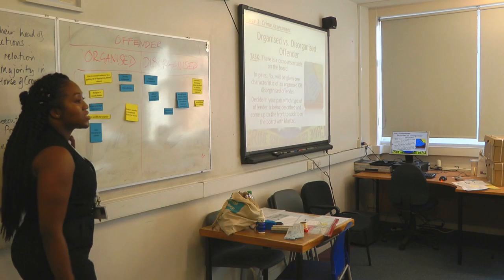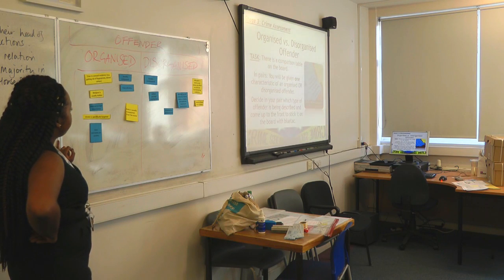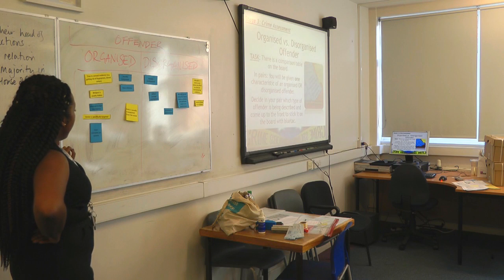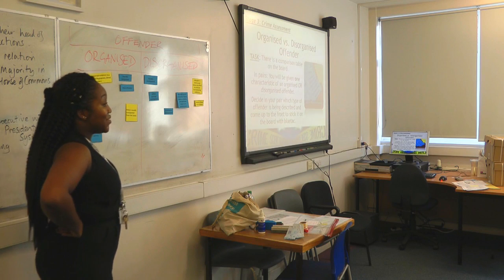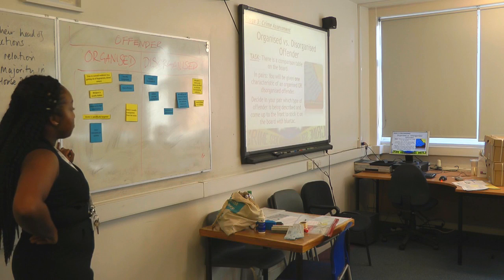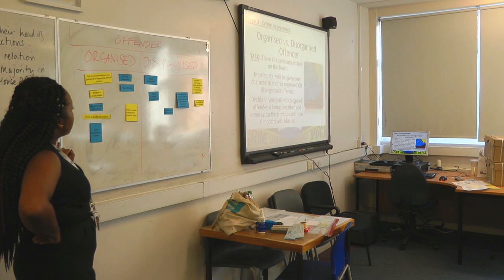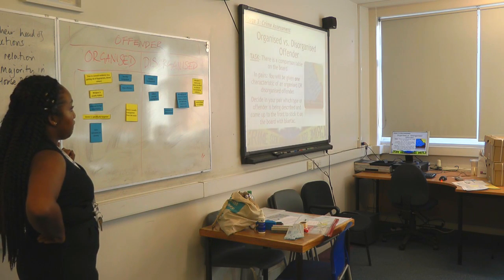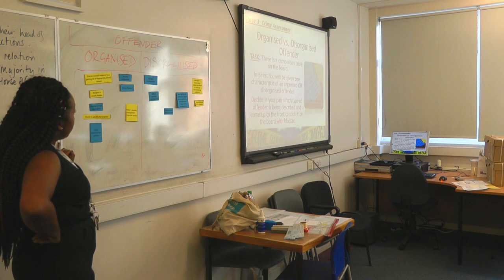Let me debate some of your selections. For an organized offender, one has said the body is usually transported from the scene — does everyone agree? Yes. For a disorganized one: the offender is messy and makes no effort to conceal incriminating evidence. For an organized person: tries to conceal evidence, for example getting rid of fingerprints, blood, and semen. Organized person has average to high intelligence. For an organized person, the victim is specifically targeted.